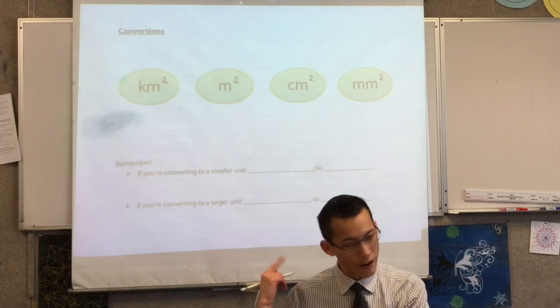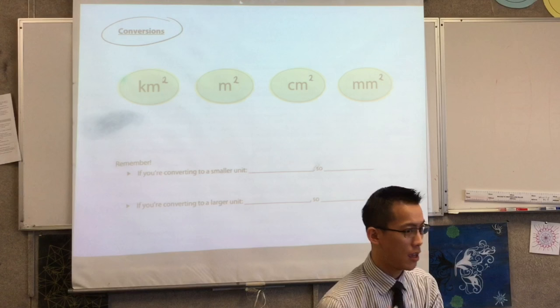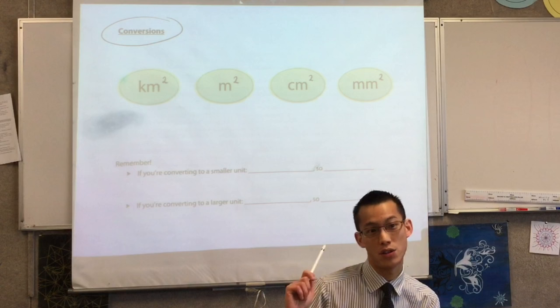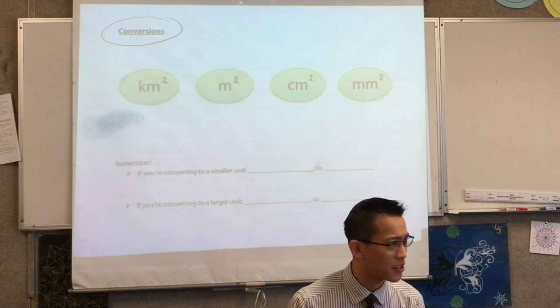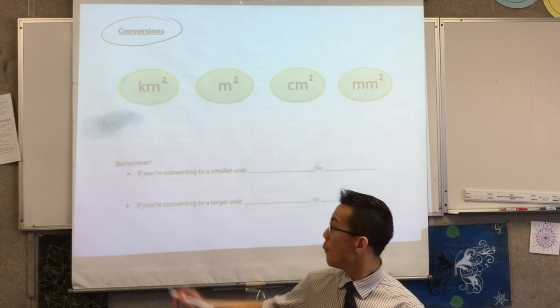But what were we converting between? What kinds of things were we measuring with all of these different kinds of units? All of these are units for one kind of thing you measure. What are we measuring? Starts with an L. Length, very good. So it's one-dimensional.